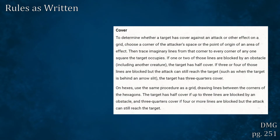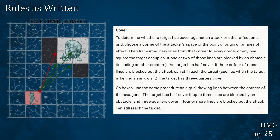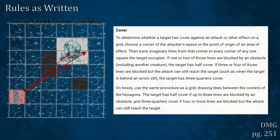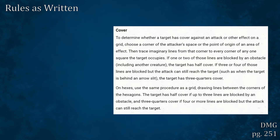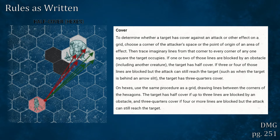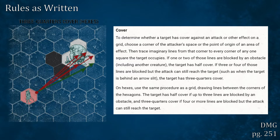To determine whether a target has cover against an attack or other effect on a grid, choose a corner of the attacker's space or the point of origin for an area of effect. Then trace imaginary lines from that corner to every corner of any one square that the target occupies. If one or two of those lines are blocked by an obstacle, including another creature, the target has half cover. If three or four of those lines are blocked but the attack can still reach the target, such as when the target is behind an arrow slit, the target has three quarters cover. On hexes, use the same procedure as a grid, drawing lines between the corners of the hexagons. The target has half cover if up to three lines are blocked by an obstacle, and three quarters cover if four or more lines are blocked but the attack can still reach the target.